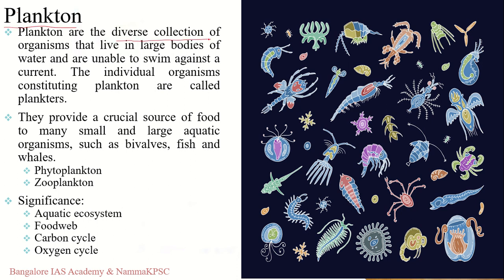The third type is plankton — a diverse collection of organisms that live in large water bodies and are unable to swim against a current. Individual organisms are called planktors. This includes bacteria, archaea, algae, protozoa, and other drifting and floating animals inhabiting the pelagic zone. Some plankton drift this way for their entire life cycle, whereas others are classified as plankton only when they are young.